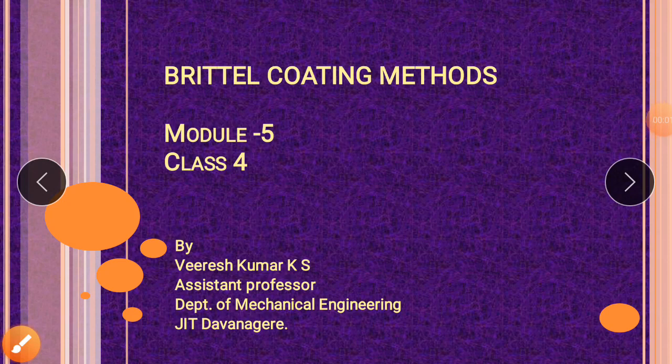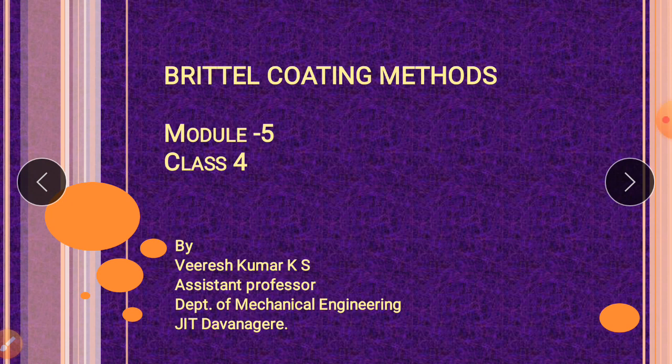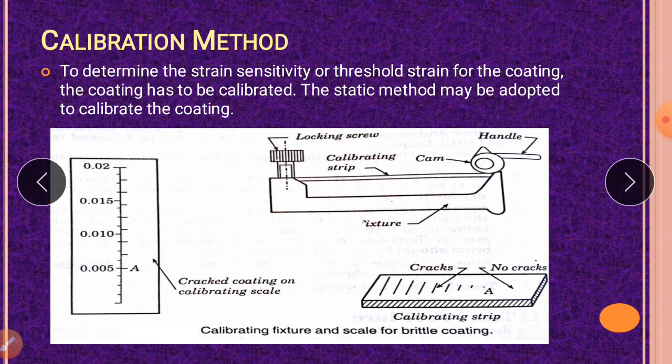Students, welcome to the fourth class of Module 5. This is the final class for Brittle Coating Methods. Myself, Varish Kumar KS, Assistant Professor in the Department of Mechanical Engineering, JIT Down. This is the final topic and it's a very important topic according to the syllabus and exam.